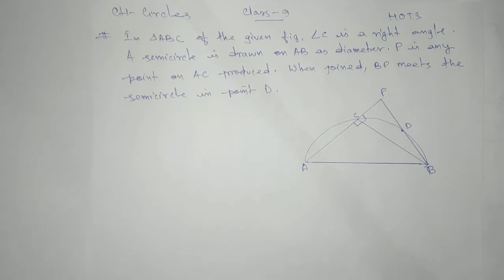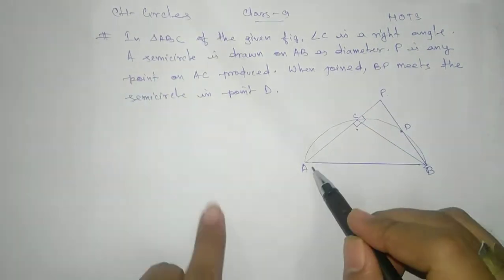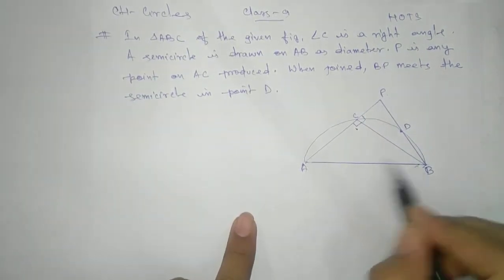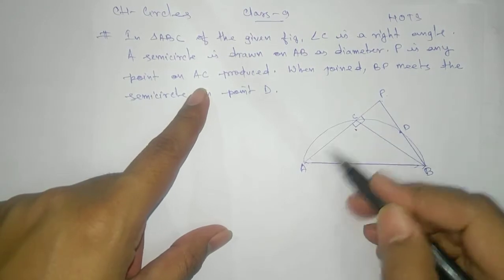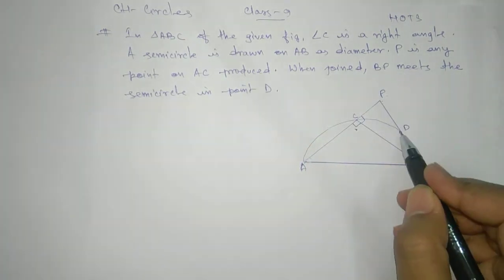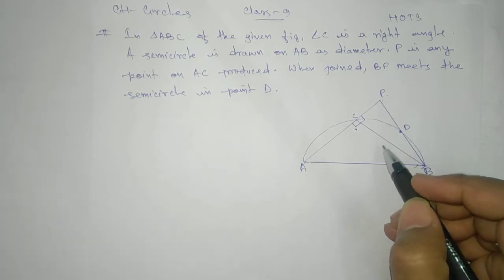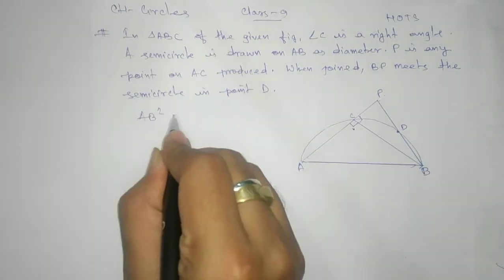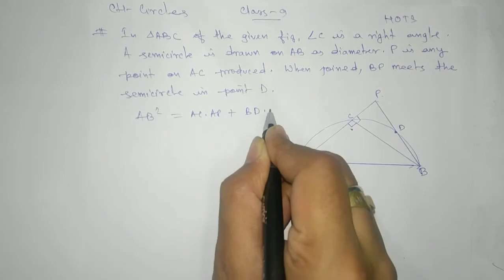Here we have a second problem — a higher-order thinking skill question related to circles for class 9. In triangle ABC, as shown in the given figure, angle C is a right angle. A semicircle is drawn on AB as a diameter. P is any point on AC. When BP is produced, it meets the semicircle at point D. We need to prove that AB² = AC·AP + BD·DP.